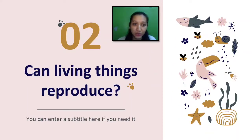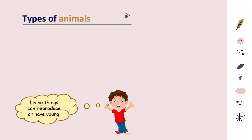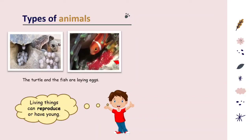What can living things do? This is the second point. Can living things reproduce? Living things can reproduce or have young. Living things reproduce so that there will always be living things like them around. There are some types of animals. Some animals reproduce by laying eggs.